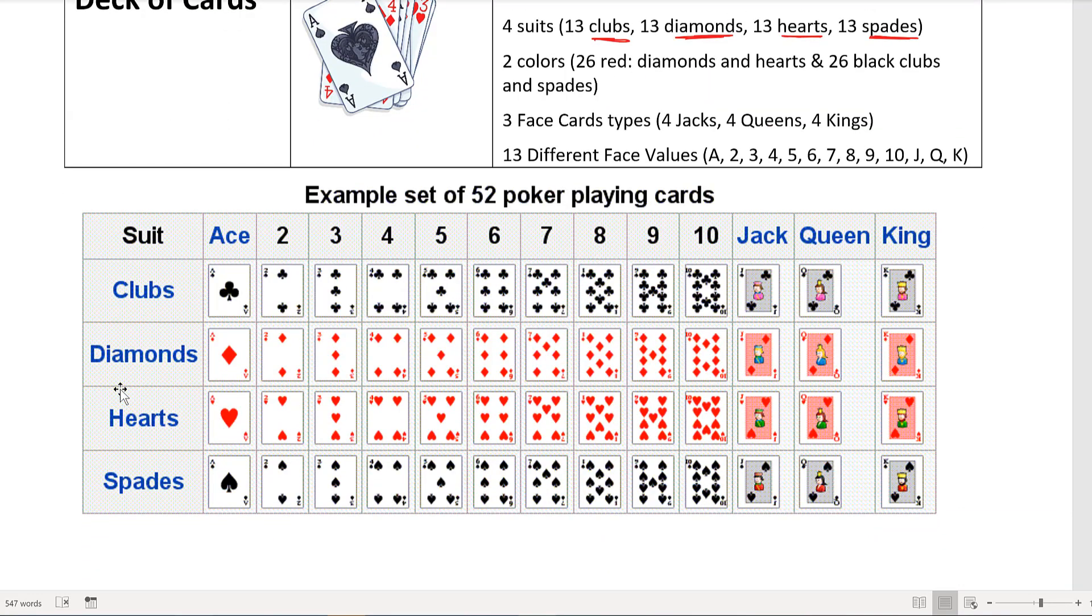Right below here is an example of a 52-card playing deck. Notice in clubs you have one of each A through ten, and then one jack, one queen, and king. Same for diamonds, same for hearts, and same for spades. Sometimes they use colors, so black is going to be spades and clubs. Sometimes they're talking about colors for red, which would be diamonds and hearts. If you need to refer back to this, you can go ahead and do so for your problems.